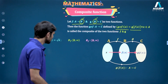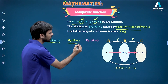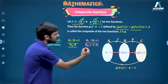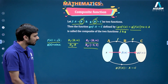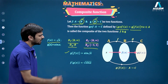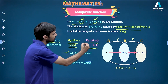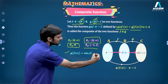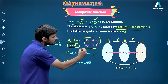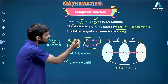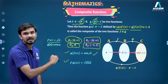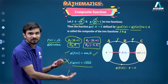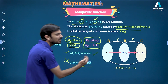Let me take an example. Suppose f(x) = √x, domain is [0, ∞), range is [0, ∞). And g(x) = sin x, domain is ℝ and range is [−1, 1]. If I define g(f(x)), it's perfectly alright because the range of f is [0, ∞) and g accepts all those values. But when I write f(g(x)), the range of g is [−1, 1] and f does not accept negative values — this creates a problem. I can't write f∘g directly; I'll have to restrict the domain of g.